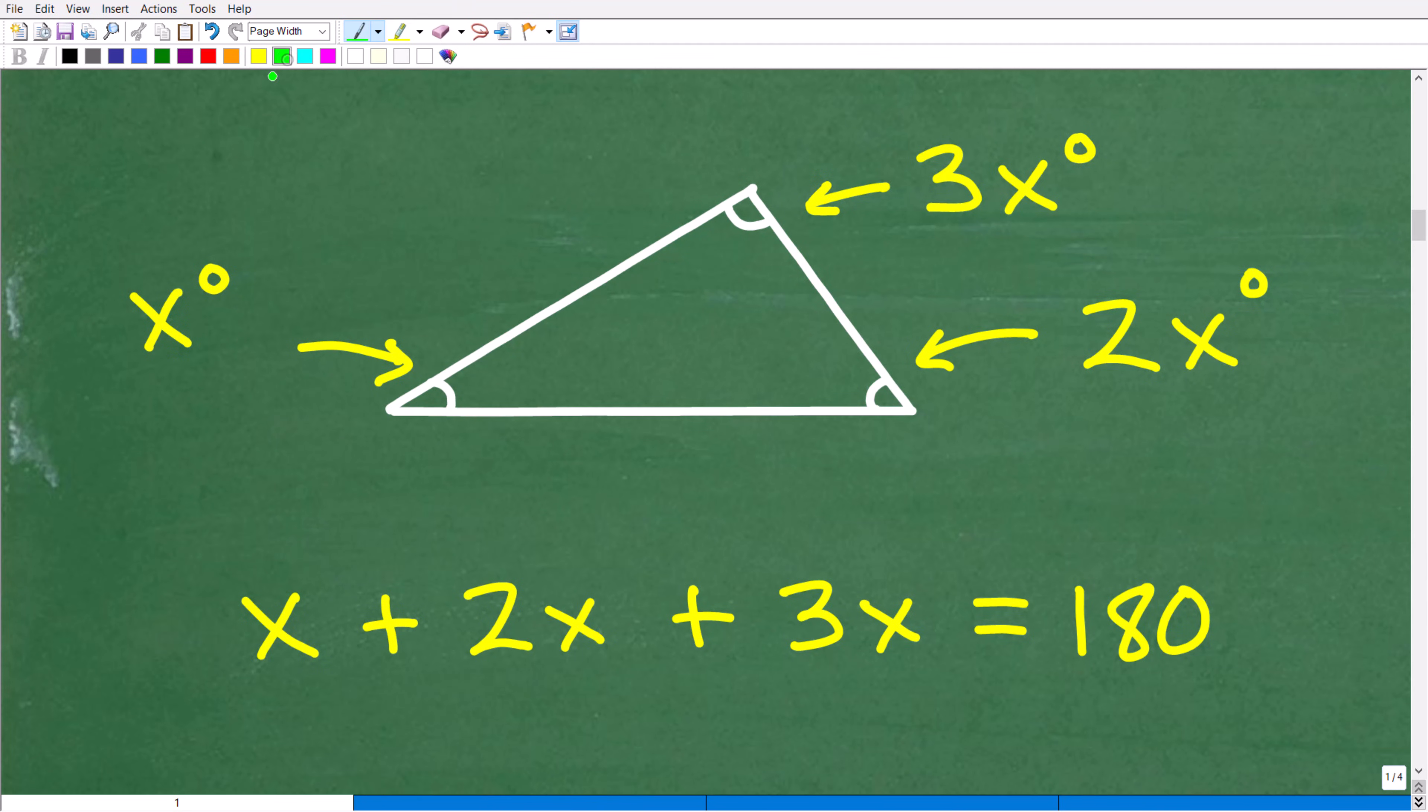All right, so this is what we have here. We have this angle x plus this angle 2x plus this angle 3x is equal to 180 degrees. We don't need to write that degree symbol in here, because it's just assumed that we are dealing with degrees.